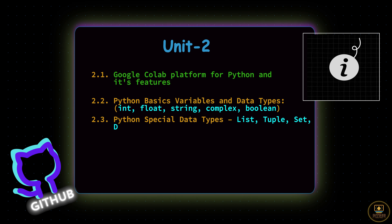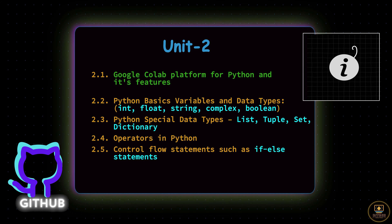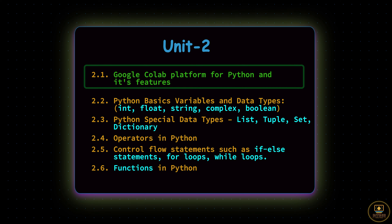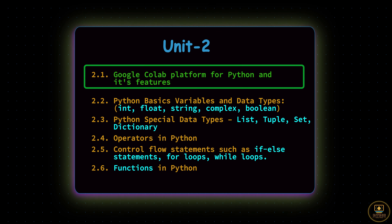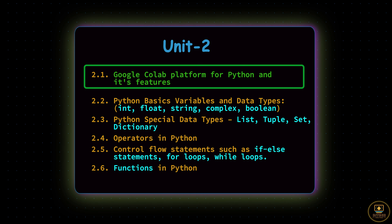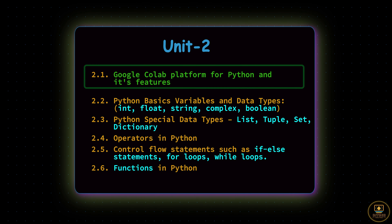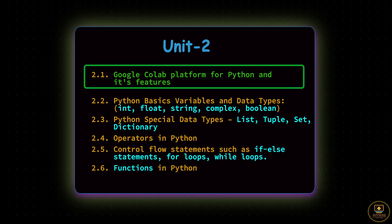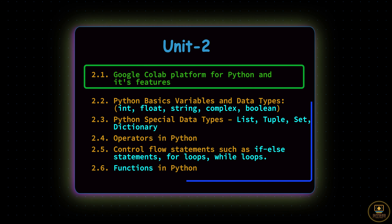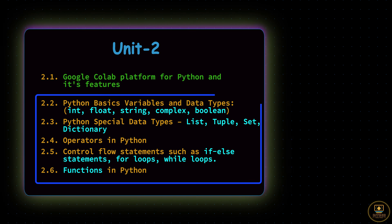I also provided the GitHub link in the description. In my previous video, that is 2.1, I covered about the Google Collaboratory platform for machine learning with Python. This video covers unit 2 for the remaining chapters, where we cover all the basic topics of Python, from chapters 2.2 to 2.6.